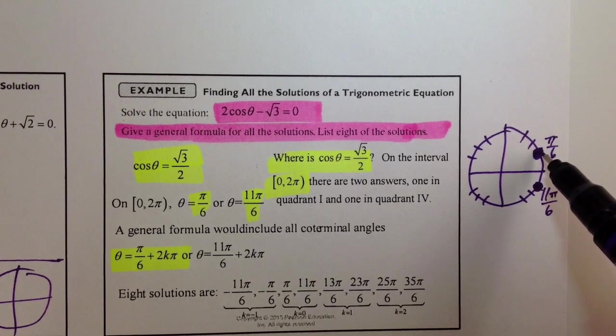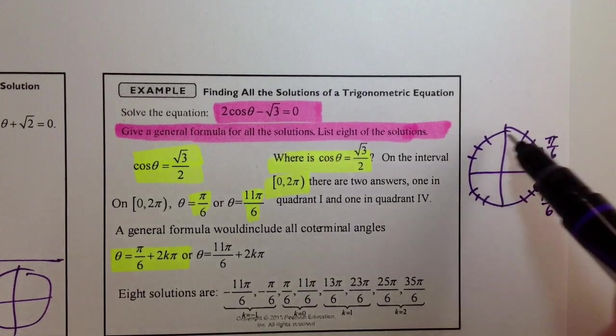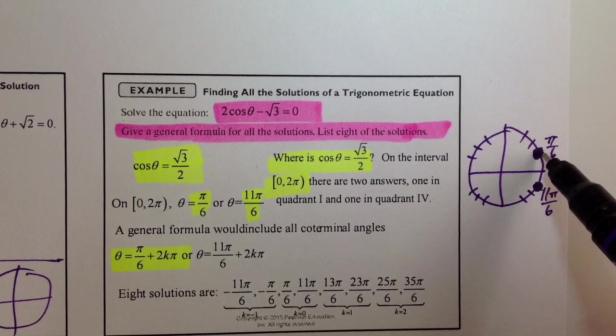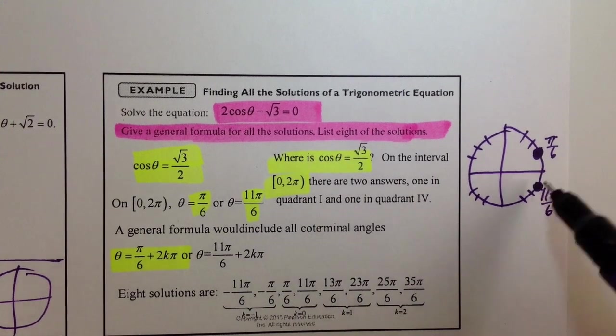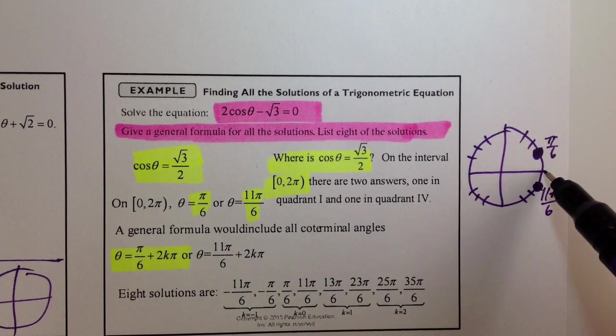then the cosine of that same angle, no matter if you call it pi over 6 or 13 pi over 6, or what would that be? So you have pi over 6 here, so you have 2 pi,